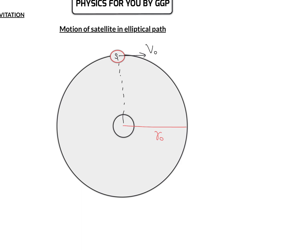Now assume you change the value of its velocity. If you reduce the velocity to less than the orbital velocity, then the satellite will move in an elliptical path. For this ellipse, it has a major axis, a minor axis, one focus, and another focus. When velocity is less than orbital velocity, the satellite moves in an elliptical orbit such that the center of the planet will be at the farthest focus.